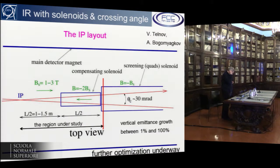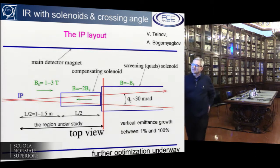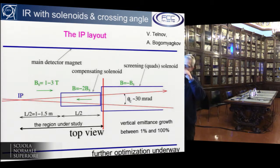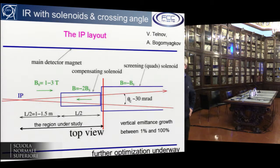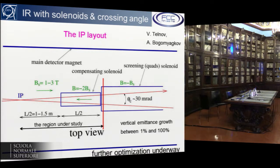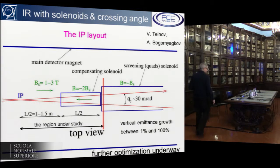The IP layout sketch assumes a 2-meter L-star from the IP to the first quadrupole. A solenoid field of between 1 and 3 Tesla at the IP is assumed, with a compensating solenoid and a screening solenoid around the first quadrupole. Telyonov computed emittance growth due to dispersion, solenoid field, crossing angle, and fringe fields: in the worst case, 100% vertical emittance growth; in a good case without fringes, only 1%. Further optimization is underway to minimize this emittance growth.